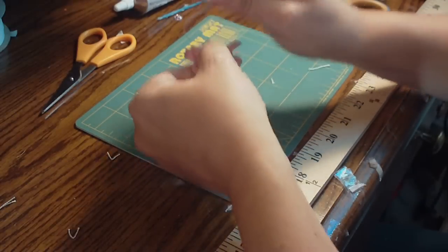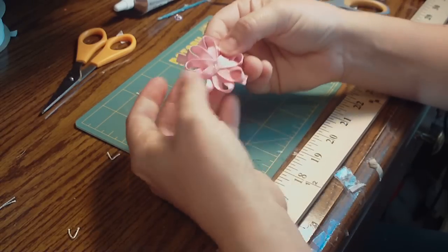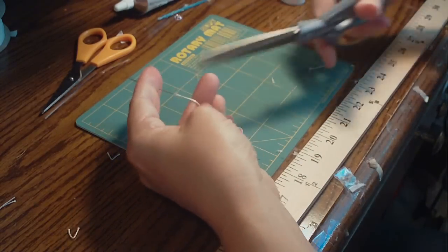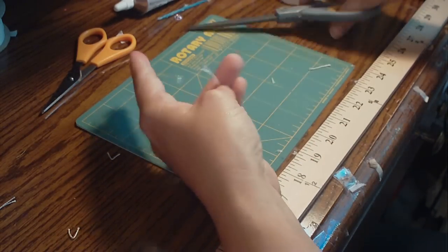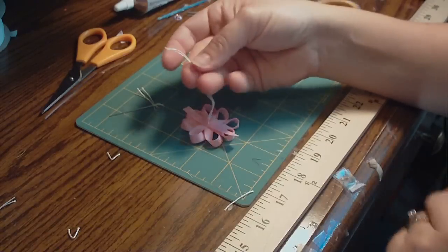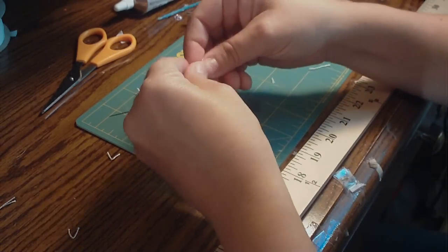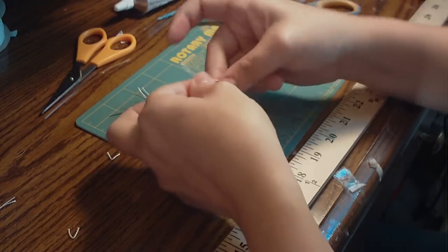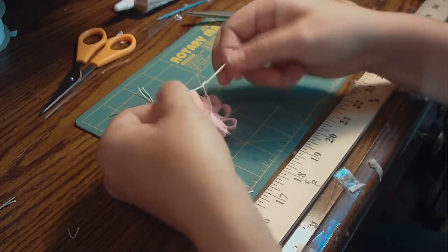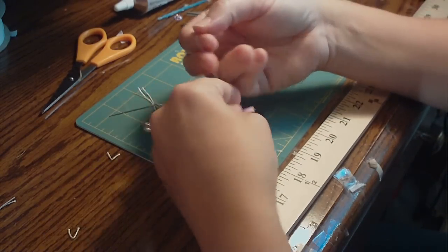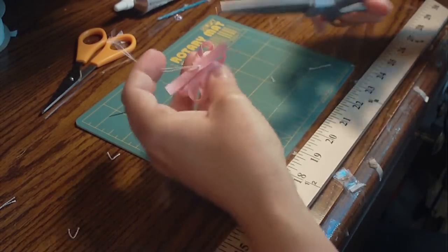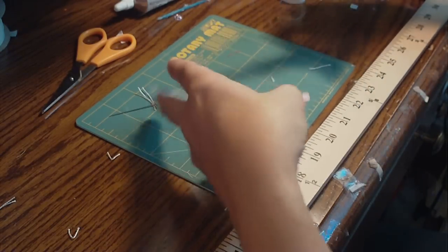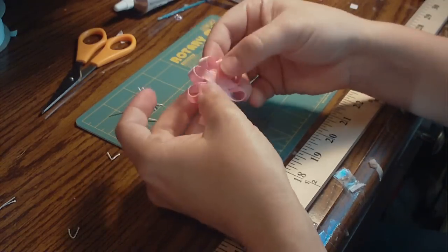It's good on that side, everything seems secure. So then we're going to cut our string, and then I just tie two knots to finish off the string. Trim that off. So now we have our flower.